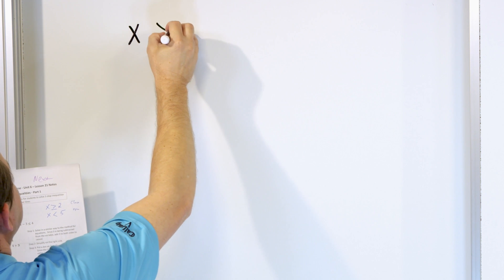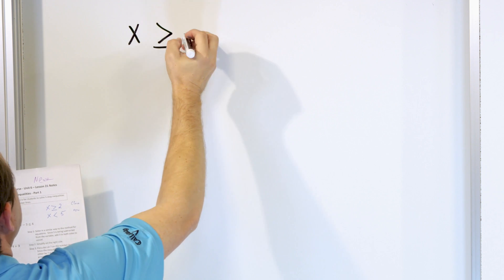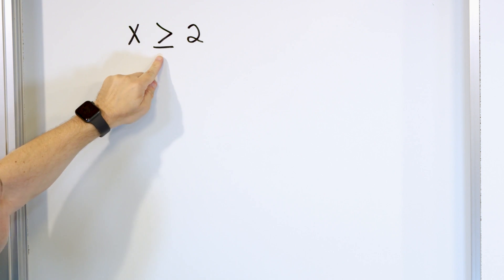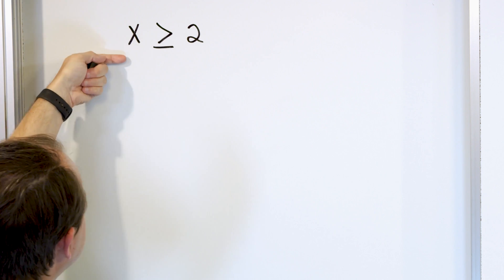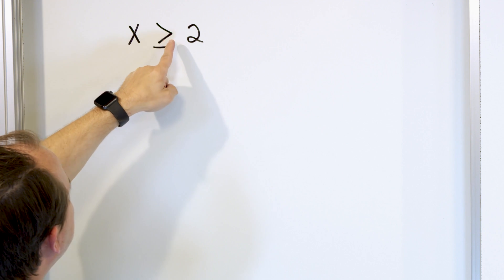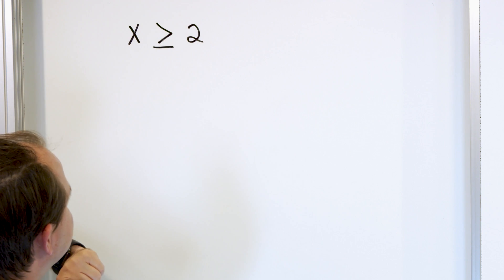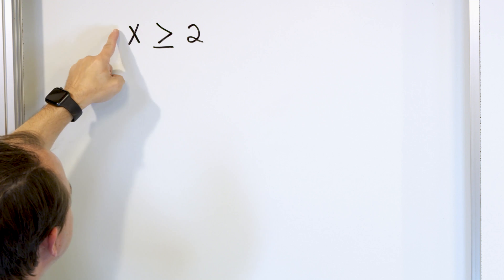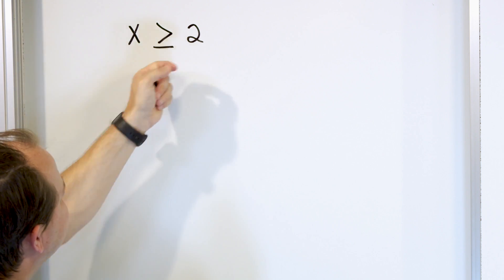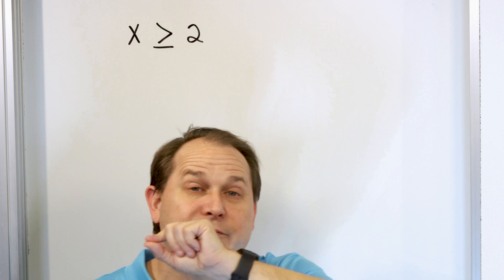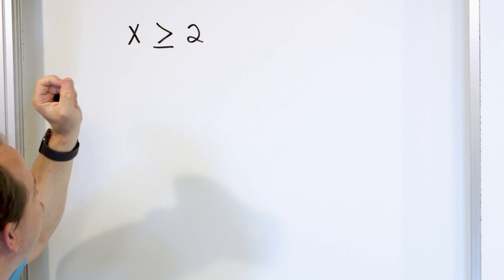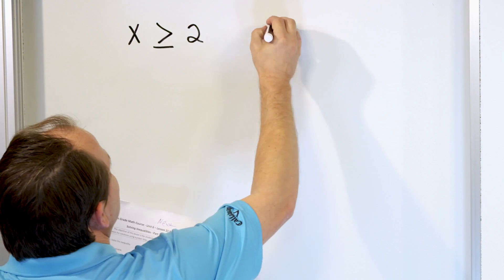So if I say x and put this symbol next to it with a two, what does this mean? This symbol, when you read it left to right, is the greater than symbol. Remember, the inequality always points to the smaller number, so the open side must point to the larger number. When you encounter the large side first, it's called greater than.